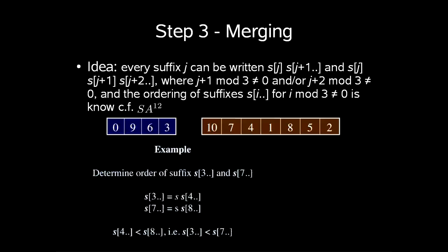Now we have to merge. The idea here is that every suffix j can be written like SJ SJ plus 1 and SJ SJ plus 1 SJ plus 2. And J plus 1 mod 3 and J plus 2 mod 3 is both different from 0 and the ordering of these suffixes S of i for i mod 3 is different from 0 is already known from SA1-2. So in an example to determine the order of suffix S3 and S7 we look at the following characters which is 4 and 8 we see that S4 is less than S8 so we know that S3 is less than S7.